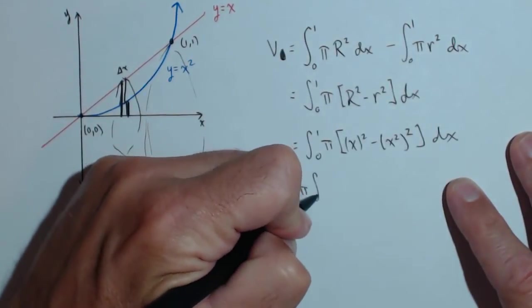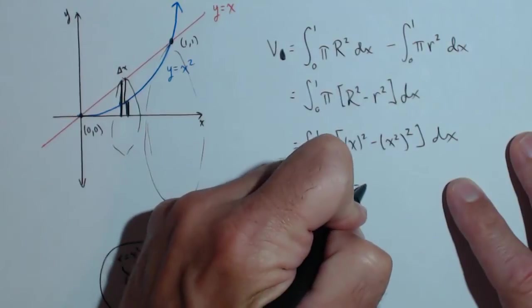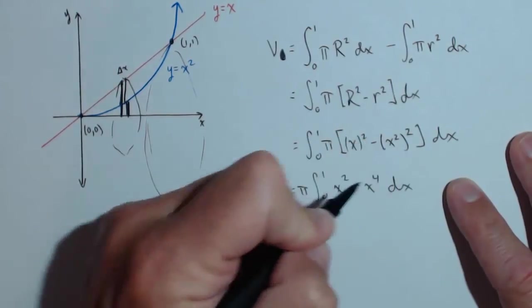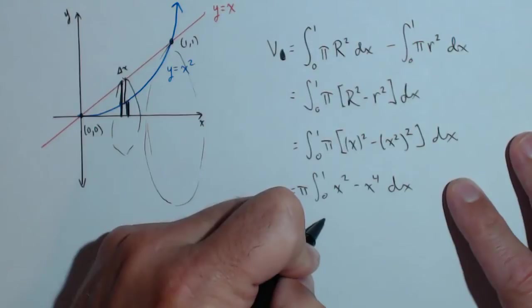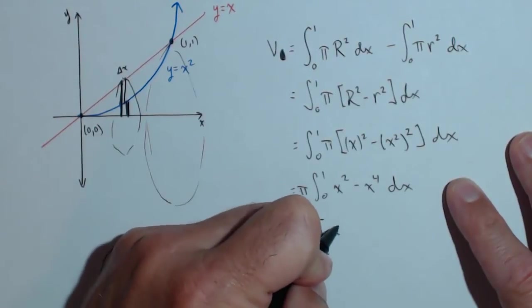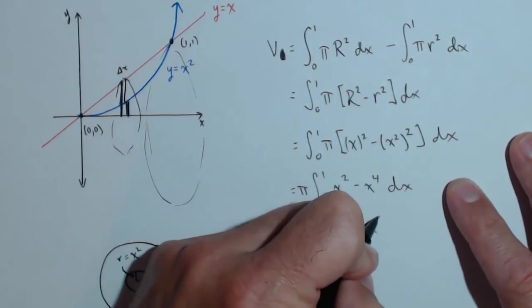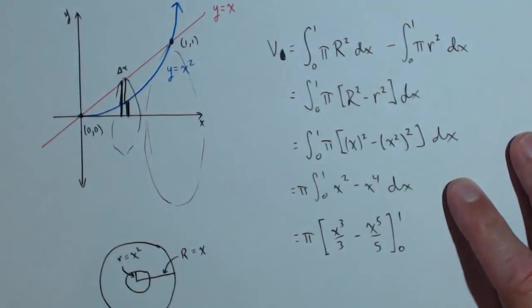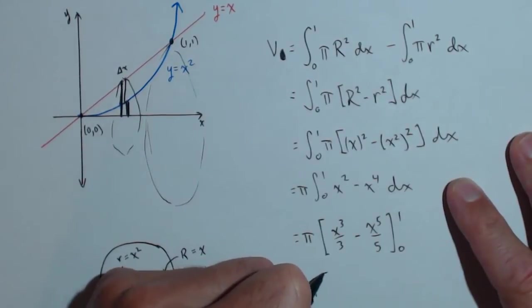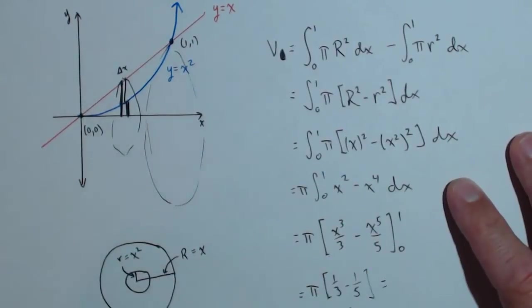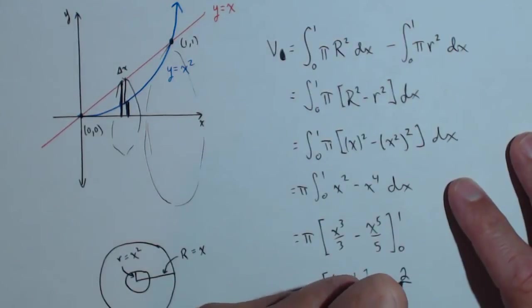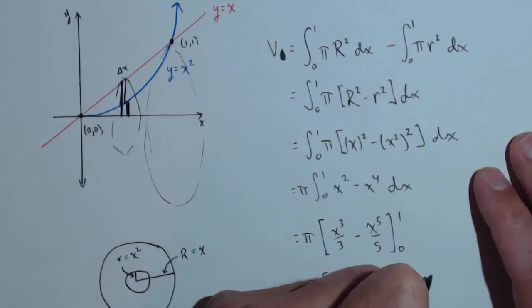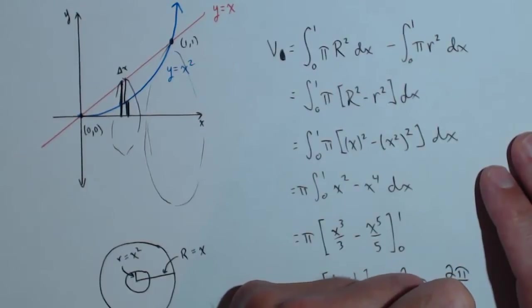So we have pi times the integral from 0 to 1 of x squared minus x to the 4th dx. Which is pi times x cubed over 3 minus x to the 5th over 5 from 0 to 1. Plugging in the limit of 0 is going to be 0. So it's just pi times 1 3rd minus 1 5th. Which, if we get a common denominator, this is 5 15ths minus 3 15ths. So 2 15ths pi or 2 pi over 15.